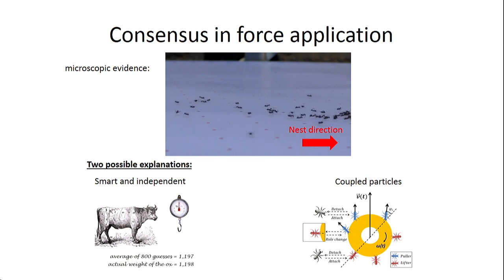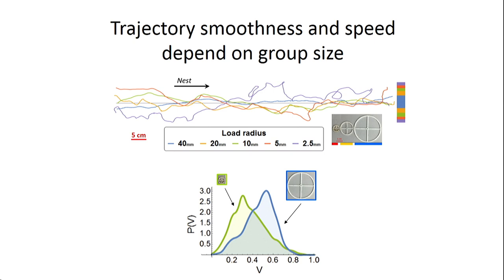We can think of two possible explanations for this. One is that we have smart and independent ants. The second is very simple ants, like particles, but coupled. And before we compare the two models, the experimental evidence I'm going to pit them against is the trajectory smoothness and speed as a function of group size. In the lab, we can prepare these artificial objects and check the characteristics of the motion. We see that very large objects travel in very smooth lines, while smaller objects wander around much more. And the large objects move faster than the smaller ones.